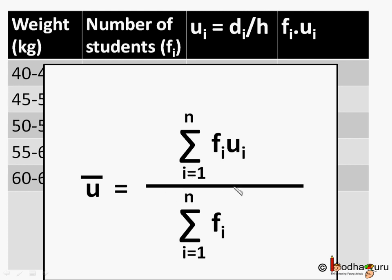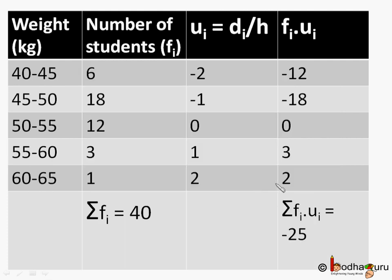Now values are so small that we can do calculations in mind. For the first row, f1 into u1 equal to 6 into minus 2, which is equal to minus 12. For the second row, f2 into u2 equal to 18 into minus 1 equal to minus 18 and so on. So sum of all the fi ui, which is the sum of the entire column will be minus 12 plus minus 18 plus 0 plus 3 plus 2 equal to minus 25.